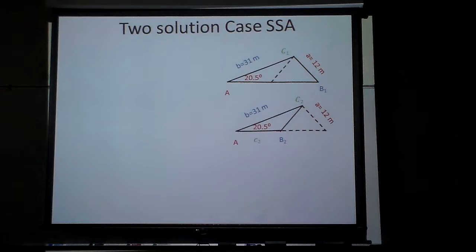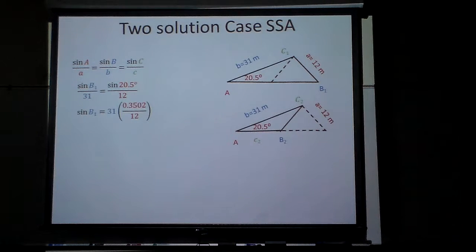So first off, let's just look at what we do know. Let's take sine. First off, I want to find B. Alright, so what I'm going to do is this here. Because I want angle B, I'm going to put sine B on top. So I'm going to have that 20.5, sine 20.5 over 12 equals, I don't know the sine of this B1 divided by 31. And here's what happens.